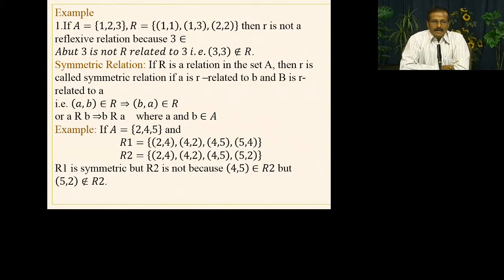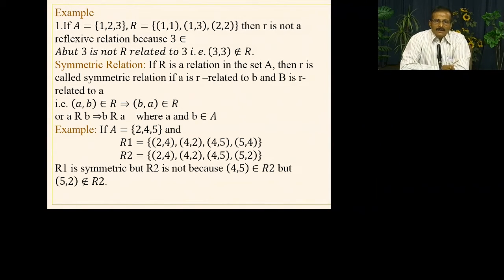For example, A = {1, 2, 3} and R = {(1,1), (1,3), (2,2)}. This R is not reflexive because (3,3) is missing. We have (1,1) and (2,2), but (3,3) is not in R. For all x ∈ A, we need x R x. A has three elements, but we don't find (3,3) in R. If (3,3) were present, we could say the relation is reflexive.